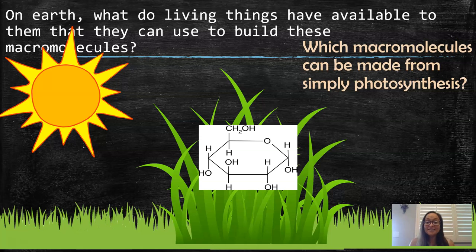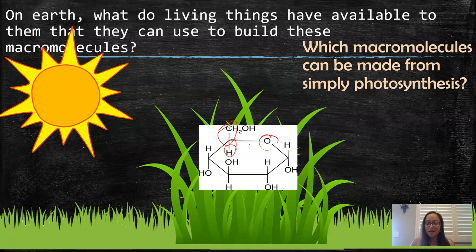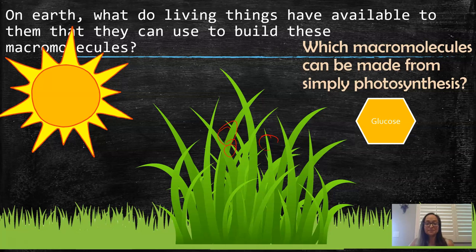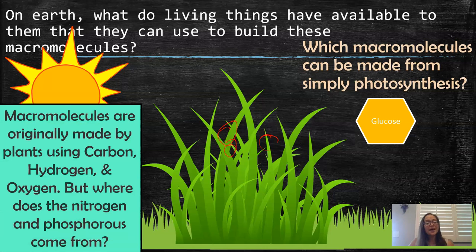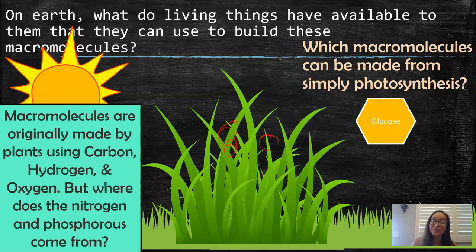This is a glucose molecule — a single sugar built by plants during photosynthesis. You can see the carbon, hydrogen, and oxygen: C, H, and O. Plants can build lipids and carbohydrates from carbon dioxide and water, but they also need to get their nitrogen and phosphorus. To build amino acids for proteins and to build nucleic acids, they get nitrogen and phosphorus from the soil.